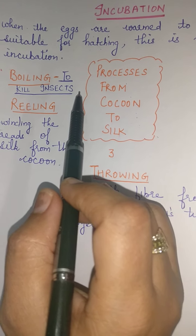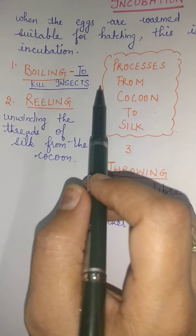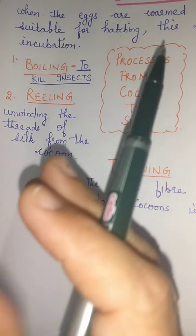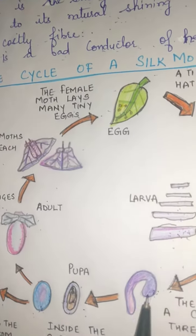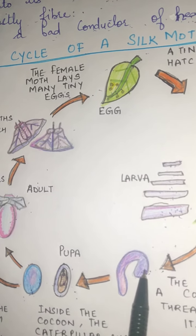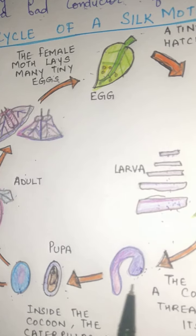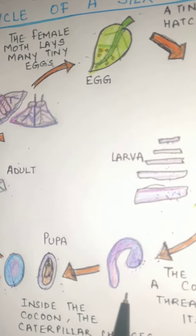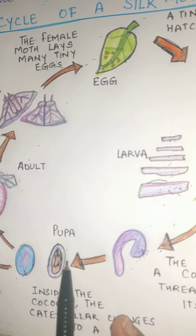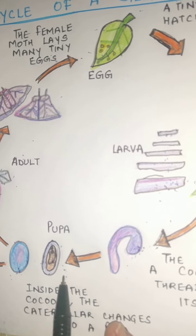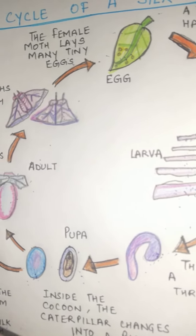As we saw in the life cycle of the silk moth, when the larva grows in size, it starts secreting a fiber. The caterpillar secretes and spins a cocoon of silk thread around itself. It is made up of protein, and the larva covers itself completely with this fiber to form a cocoon.